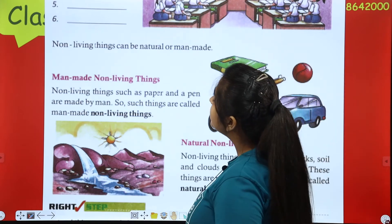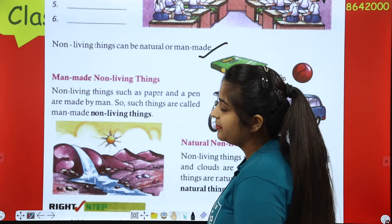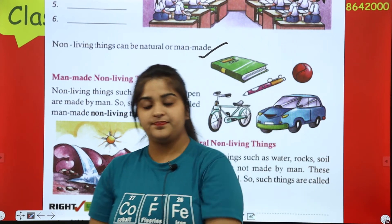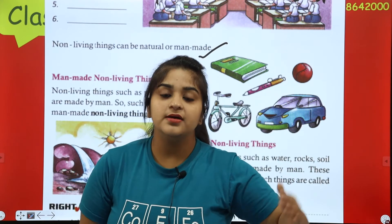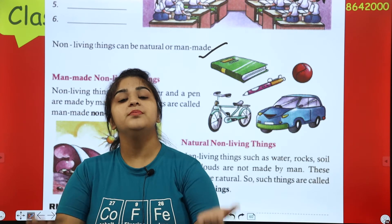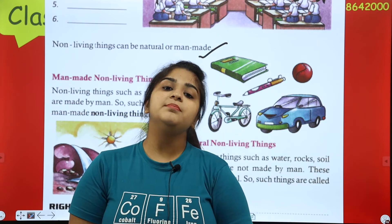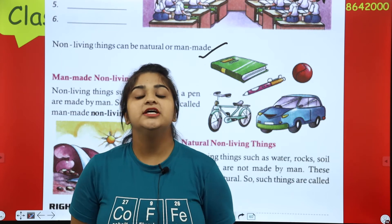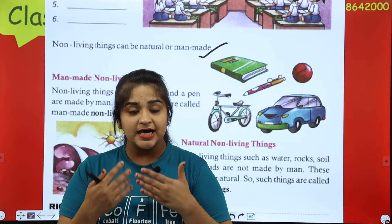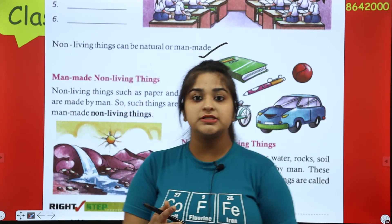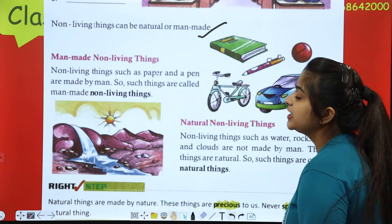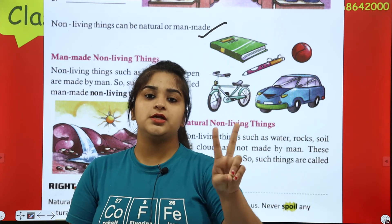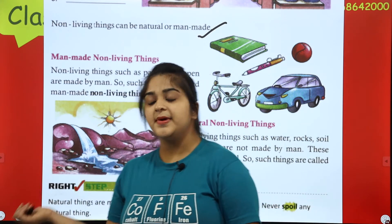Non-living things can be natural or man-made. They also have two types: natural, which we got from nature, given by God; and man-made, which we have made ourselves — like a table or chair, which we made with wood.